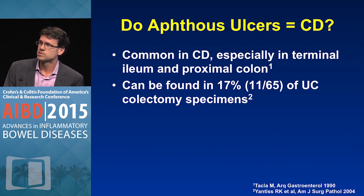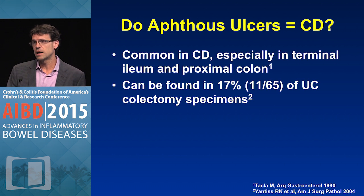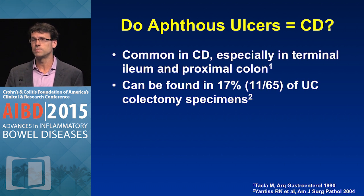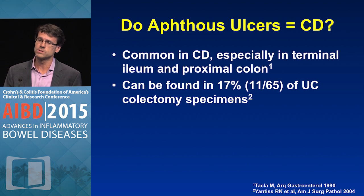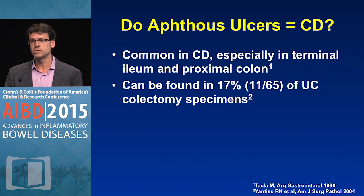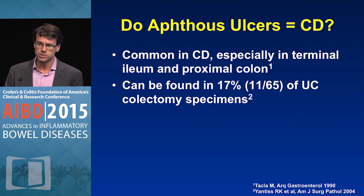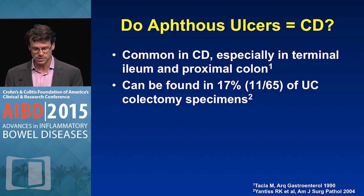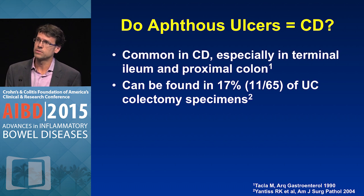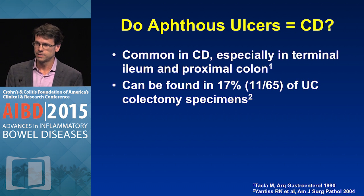How about aphthous ulcers? We see these commonly in patients. Does it mean you have Crohn's disease? There's some data in ulcerative colitis — in one series from the Brigham, they were found in 17% of specimens. So having aphthous ulcers does not make the diagnosis of Crohn's.